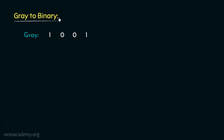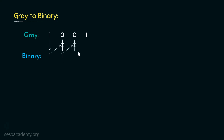Let's now move on to gray to binary conversion. Say we have a gray value 1 0 0 1. First, we keep the MSB as it is, so B3 = 1. For B2, we XOR this MSB with the next gray bit: 1 XOR 0 = 1. For B1, we XOR B2 with the next gray bit: 1 XOR 0 = 1. For the LSB, we XOR B1 and G0: since both are 1, the result is 0. So the binary equivalent is 1 1 1 0.